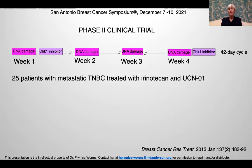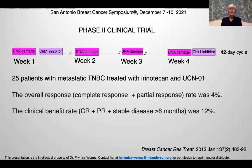This led to a phase two clinical trial where patients were treated with irinotecan and UCN-01 on the same 42-day cycle. Unfortunately, the overall response and clinical benefit was not that great. It was at this point in my career where I realized I had an opportunity to really use all of the information and discoveries we had made in terms of cell cycle and checkpoint control for the benefit of cancer patients, and so I decided to relocate my research program to MD Anderson Cancer Center.